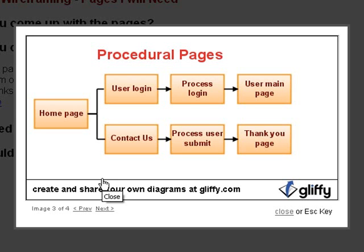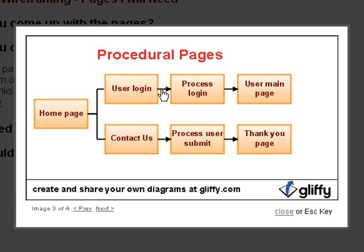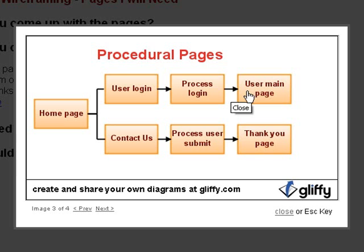These are some examples of procedural pages. For example, from the home page you can click on user login, then it takes you to a login page. After the user submits it, you have another page in the background processing that login to check if the username and password is correct. And then after it passes, it will redirect the user to the user's main page. You see these are arrows going one way — this is procedural type pages.